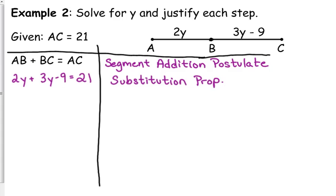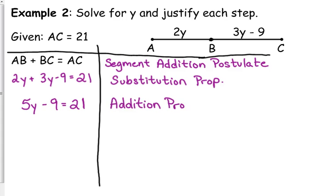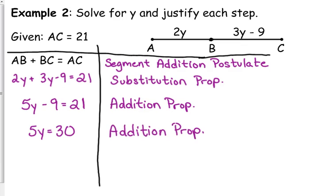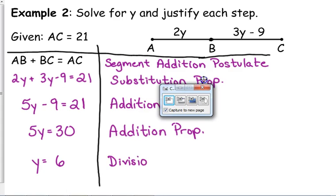You don't have to write out 'property' every time — you can abbreviate it. We need to combine like terms: combine 2Y and 3Y to get 5Y minus 9 equals 21, so that's the addition property. We need to move that 9, and to do that we add again, so that's another addition property. Then divide by 5 to find that Y equals 6, which is the division property.